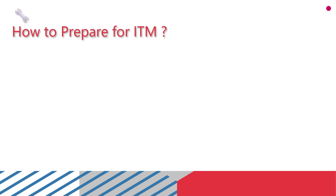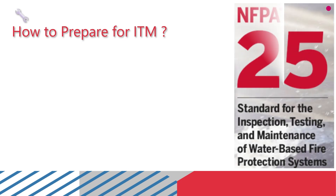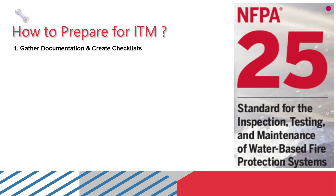How to prepare for ITM — here is a step-by-step checklist you can follow. Number one: gather documentation and create checklists. Start with the paperwork, know what you are inspecting, make a checklist and schedule your work — this keeps everything organized and focused. Number two: check as-built drawings — make sure updated as-built drawings are available.